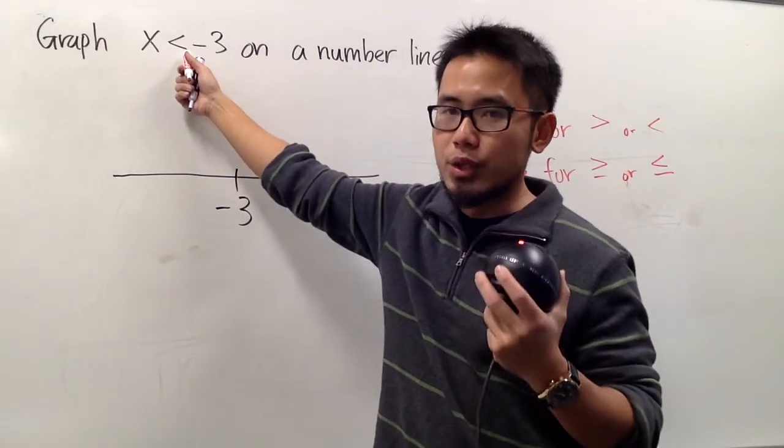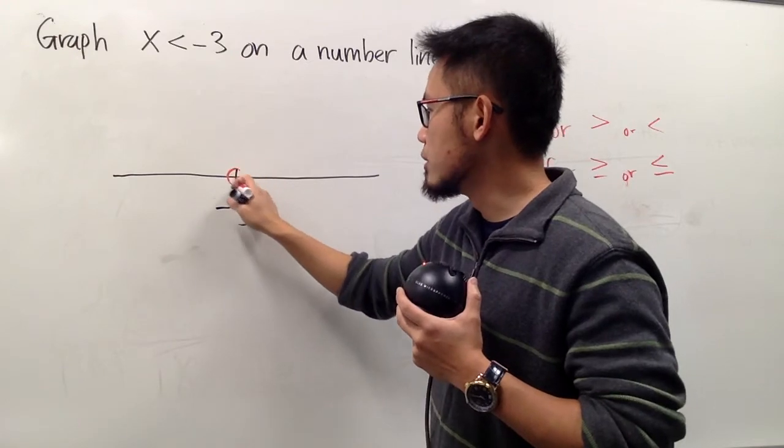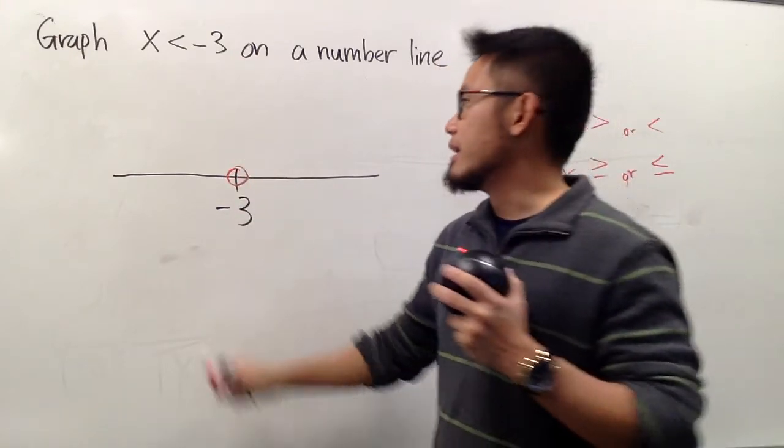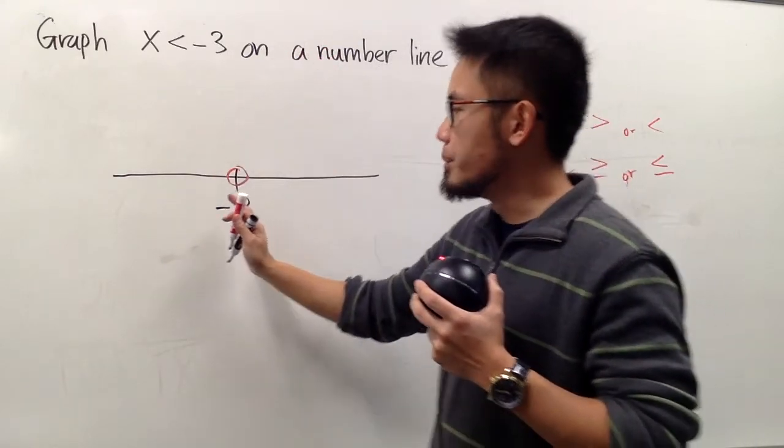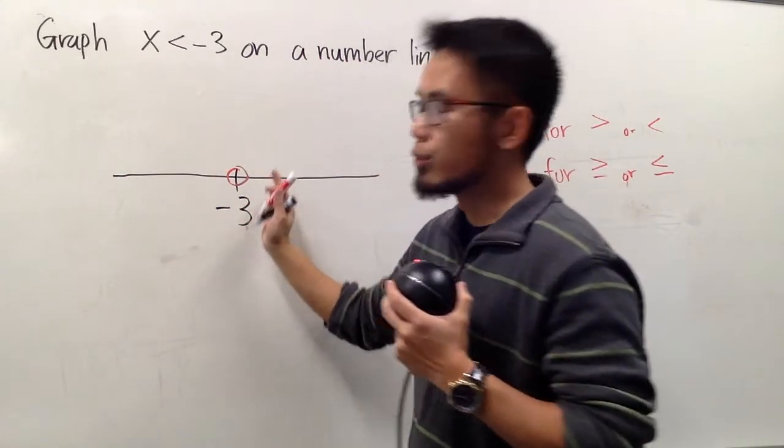This is just a less than, there's no equal sign, so we use an open circle right here. And at the end, you see, x is less than negative 3. We want the sign to be less than negative 3, so we go to the left.